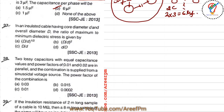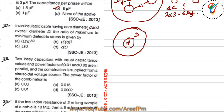Next question: in an insulated cable having a core diameter d (small d) and overall diameter D (capital D), the ratio of maximum stress to minimum dielectric stress is given by? The cable has core diameter d and outer diameter D, and we need to find the ratio of G_max to G_min.